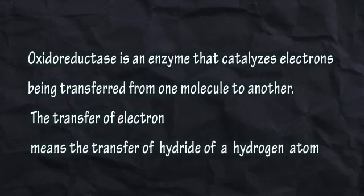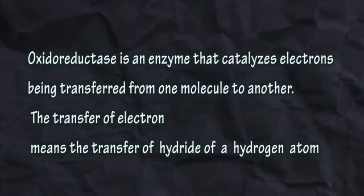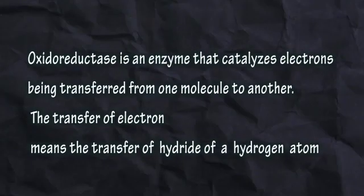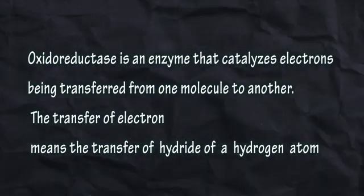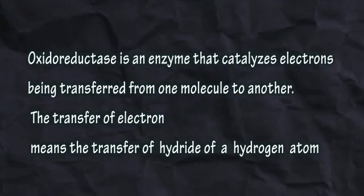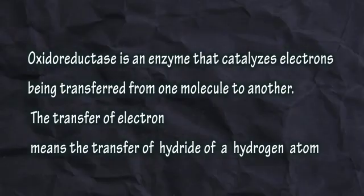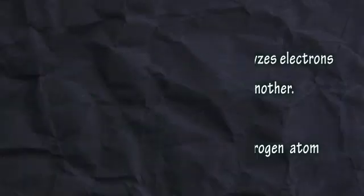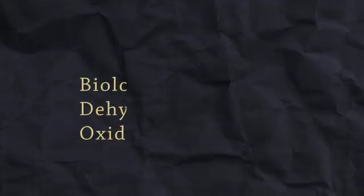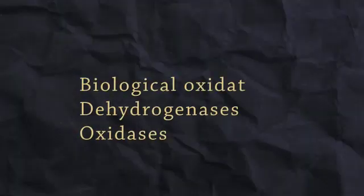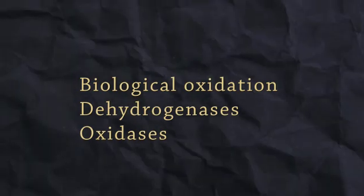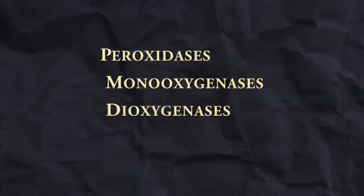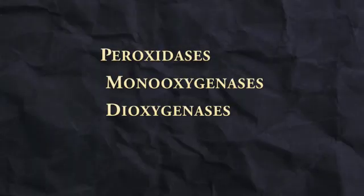The first type is Oxidoreductases. Oxidoreductases are enzymes that catalyze electrons being transferred from one molecule to another. The transfer of electrons means the transfer of a hydrogen atom. Oxidoreductases include biological oxidation, dehydrogenases, oxidases, dioxidases, monooxygenases, and dioxygenases.